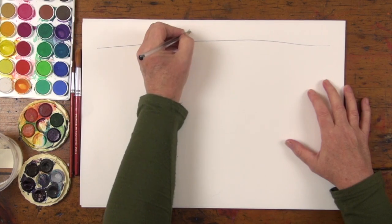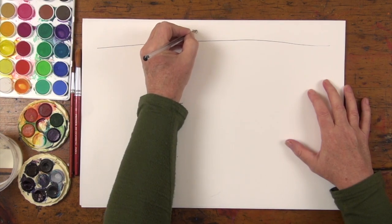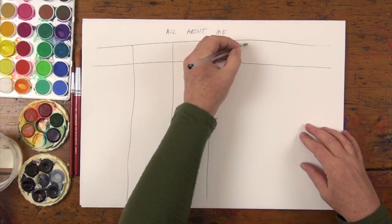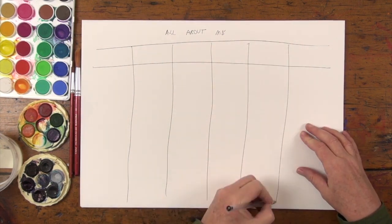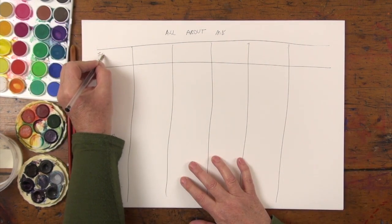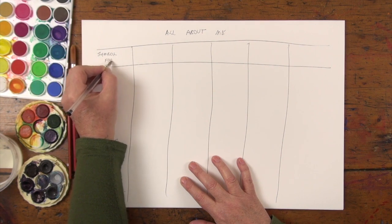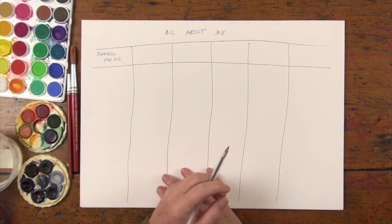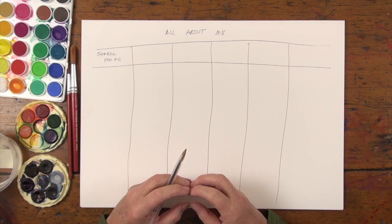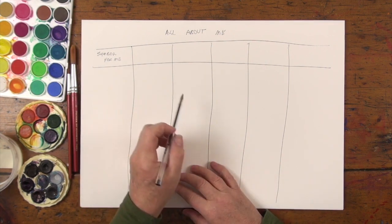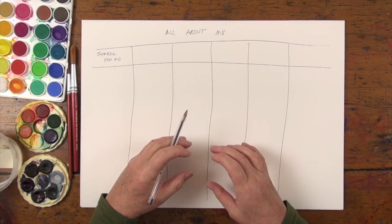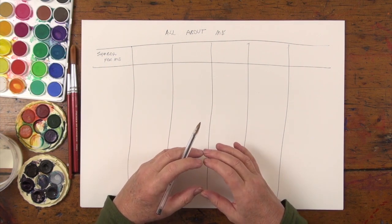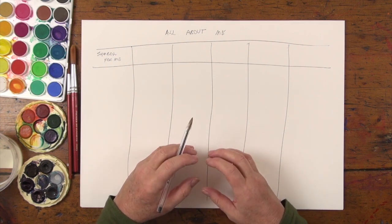At the top, write 'all about me.' Then divide your chart into six columns. The first column is 'symbol for me.' This is going to be the symbol that everyone will identify with you. When we create our design, it is going to go into the middle. So we need to think about something that is so essential to you.